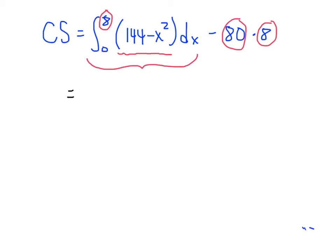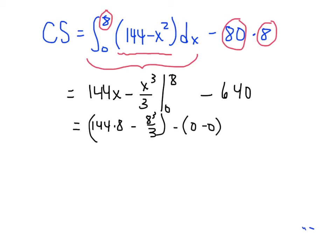You can also do it the old-fashioned way using the anti-derivative, which I'll do right here. It's just 144x minus x cubed over 3, and I'm going to evaluate that between 0 and 8. Don't forget we're going to subtract off 640—eight times 80 is 640. When you plug this in, you're going to get 144 times 8 minus 8 cubed over 3, and when you plug in 0 of course you get 0 minus 0. Then don't forget the minus 640. I've gone ahead and calculated this on my calculator—this is going to be 981 and a third.